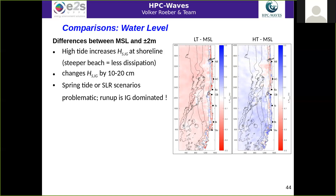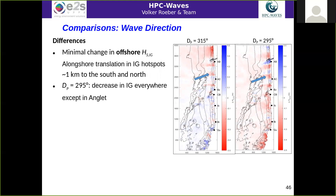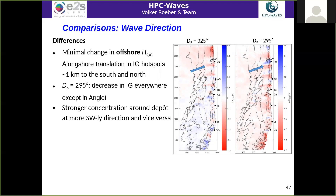Wave direction has minimal changes to the offshore significant wave for infragravity waves, but we can see that changing direction shifts infragravity wave hotspots to the south or north depending on the swell direction. For a more southerly approach, infragravity wave energy decreases everywhere except at Onglet, and there is stronger concentration around the depot at a more southwesterly swell direction, and vice versa.